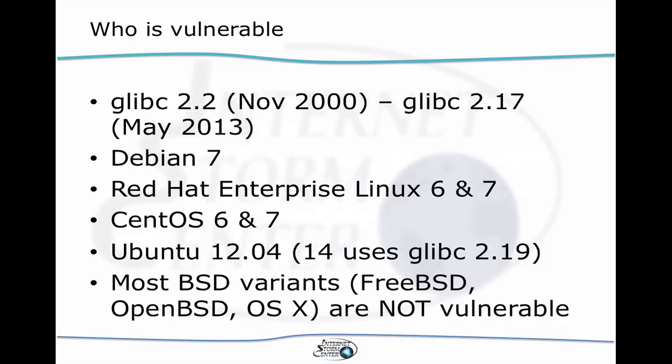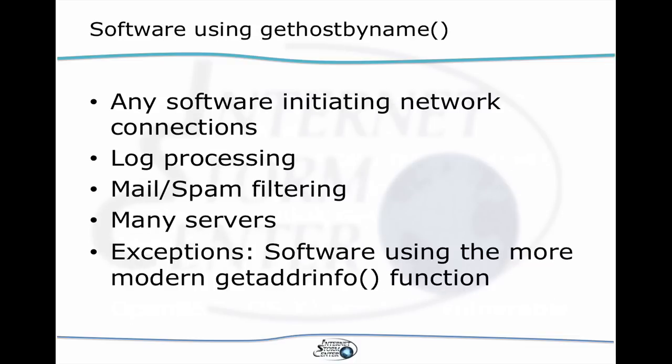For example, Red Hat Enterprise Linux 7, which is very recent, and CentOS 7, its equivalent, are vulnerable. Ubuntu 12 is vulnerable. Ubuntu 14, which is the latest long-term support version, is not vulnerable — it uses glibc 2.19. As for the BSD variants, they're typically not vulnerable, at least not out of the box. But if you install, for example, on OS X some of the Homebrew ports that allow you to port Linux software over to OS X, then you may have installed glibc and may be vulnerable.